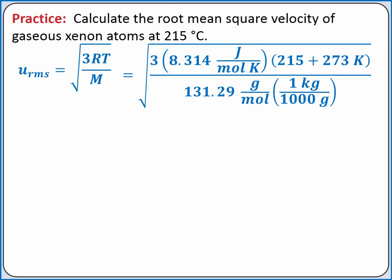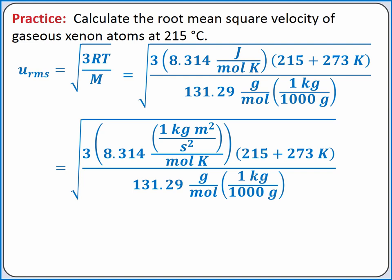If we substitute in one kilogram meter squared per second squared for joules in our ideal gas law constant, we'll see how units cancel out. Kilograms cancel out, grams cancel out, Kelvin cancels out, moles cancel out. And we're left with units of meters squared per second squared. These units are inside the square root, so the units for our root mean square velocity are just meters per second. Completing the calculation, we get 304 meters per second.